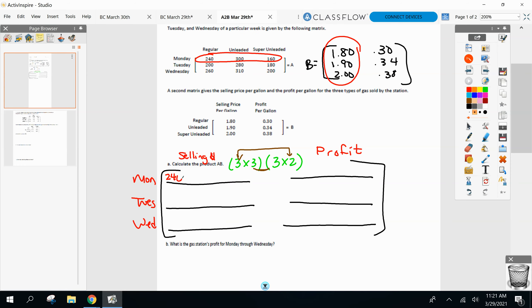240 times $1.80 plus 300 times $1.90 plus $1.60 times $2. Remember, that's how we multiply. I'll do one more with you and then I'll let you go. So now do row one, column two. Row one, column two. 240. But now you're going to multiply it by 30 cents, 0.3. Plus 300, but now times 0.34. Plus 160 times 0.38. All right. I'll let you guys go through right now. I'll give you about five, six minutes to finish your matrix and see if we match at the end. Now you guys should be going to row two, column one.